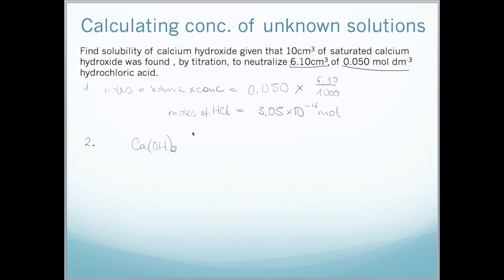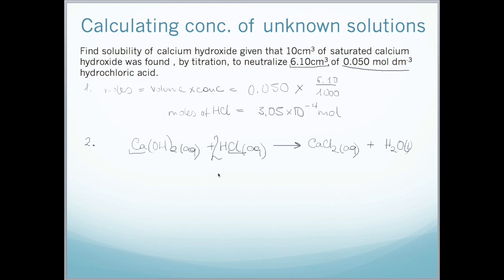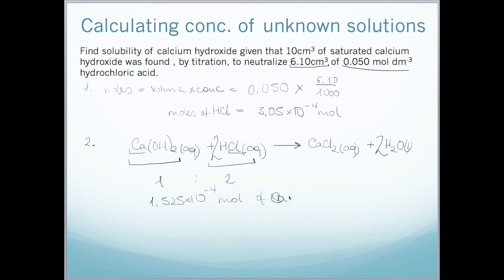We then use the stoichiometry of the equation to find the moles of calcium hydroxide. Since we are not given the equation, we must write it ourselves. Calcium hydroxide aqueous reacting with hydrochloric acid aqueous produces water plus calcium chloride aqueous. We balance it so that there are 2 moles of HCl for every 1 mole of Ca(OH)₂, giving a 2:1 ratio. Therefore, we divide the moles of HCl by 2, giving 1.525 × 10⁻⁴ mol of calcium hydroxide.